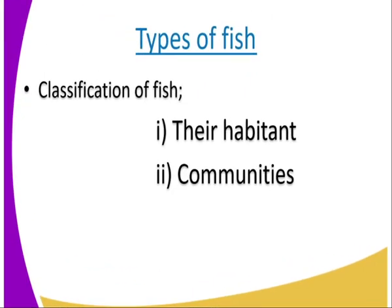We start by looking at the types of fish. There are a number of types of fish, but there are two ways in which we can classify them. Fish can be classified either using their habitat — the place where they live — or using their community, that is, whether they live in communities.